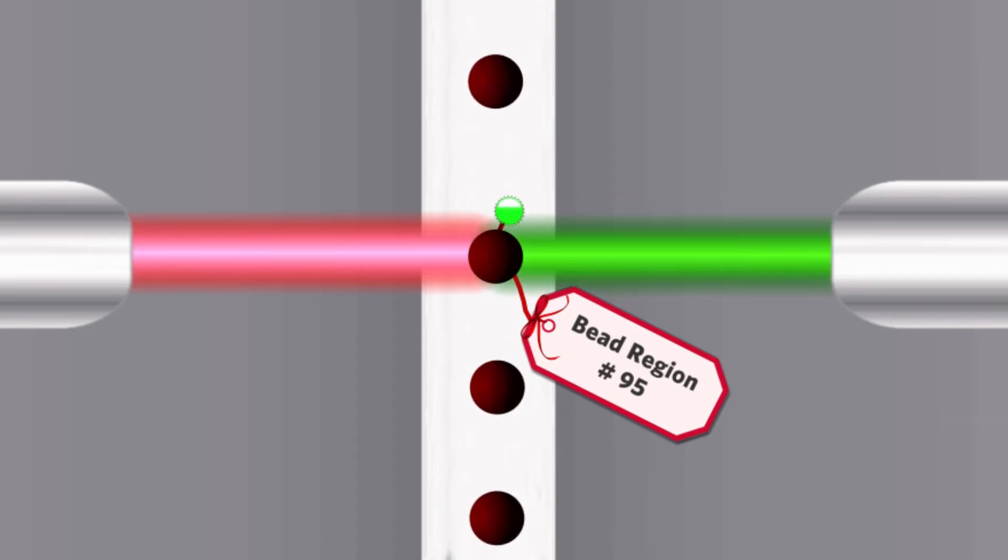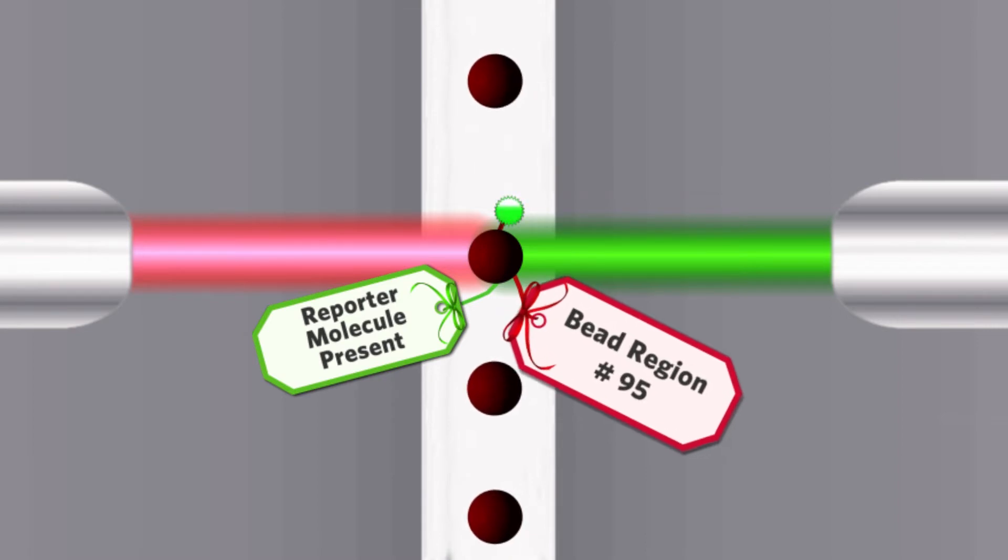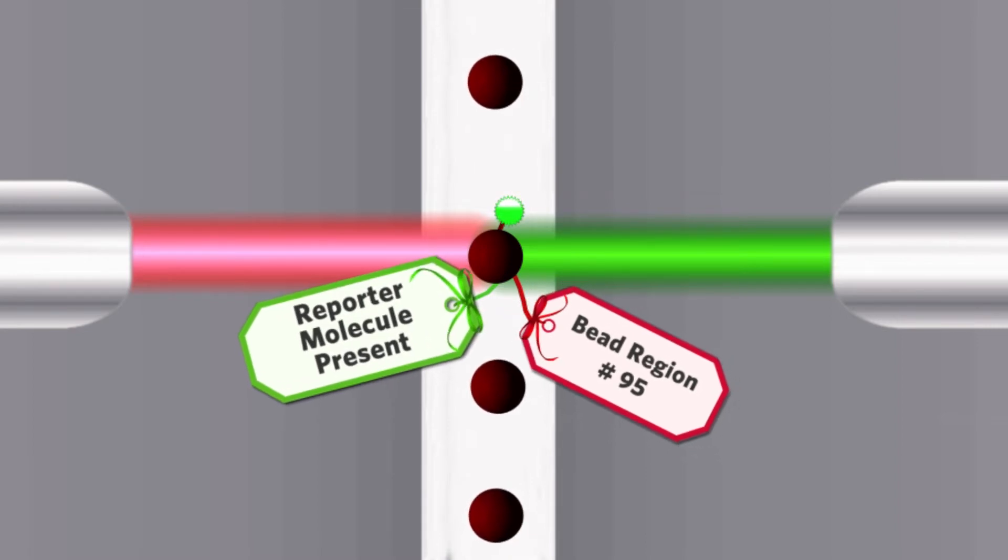The green 535 nm laser identifies the fluorescence of the reporter molecule. It works with its own sensor. Both the bead ID is mapped and the median fluorescence intensity is measured.